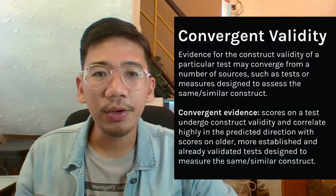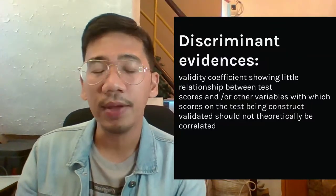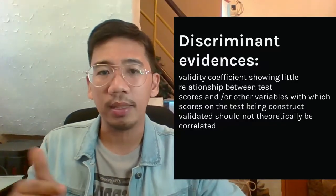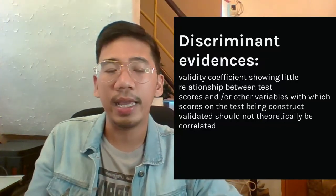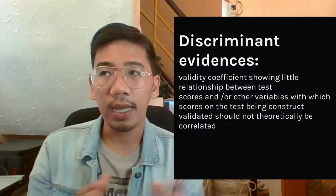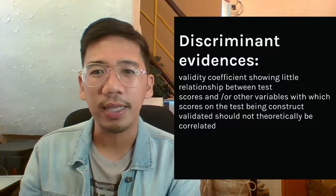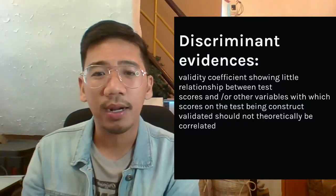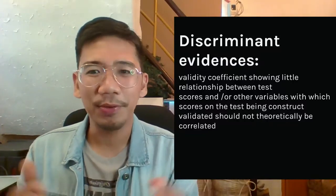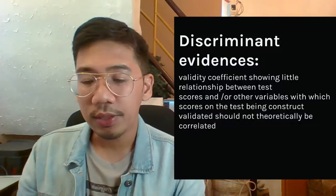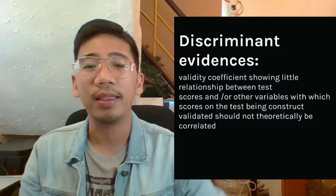Finally, there is what we call discriminant validity. Discriminant evidences are validity coefficients showing little relationship between test scores and other variables with which scores on the test being constructed and validated should not theoretically be correlated. So on one hand, we measure how closely related scores on our new test are to an existing test measuring a similar or the same construct. On the other hand, we also measure how unrelated our test scores are to existing tests that should theoretically not be related to it.